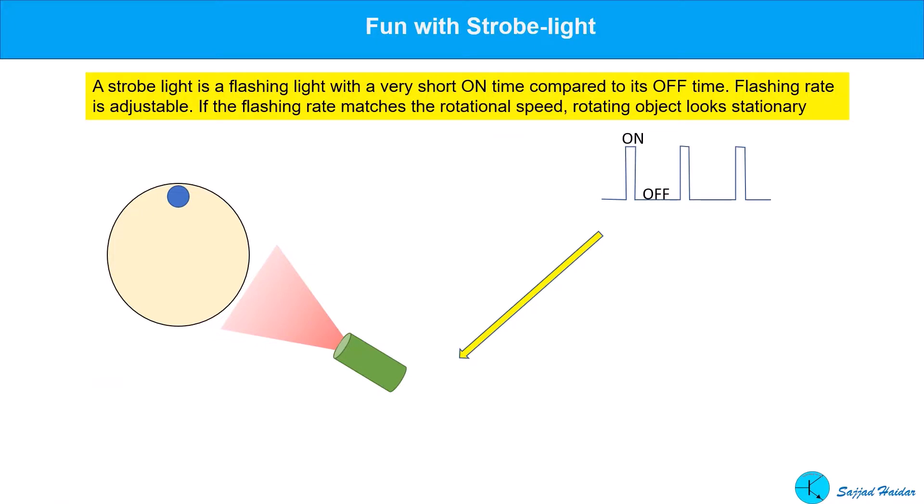A strobe light is a flashing light with a very short on time compared to its off time. Flashing rate is adjustable and if the flashing rate matches the rotational speed, rotating objects look stationary.